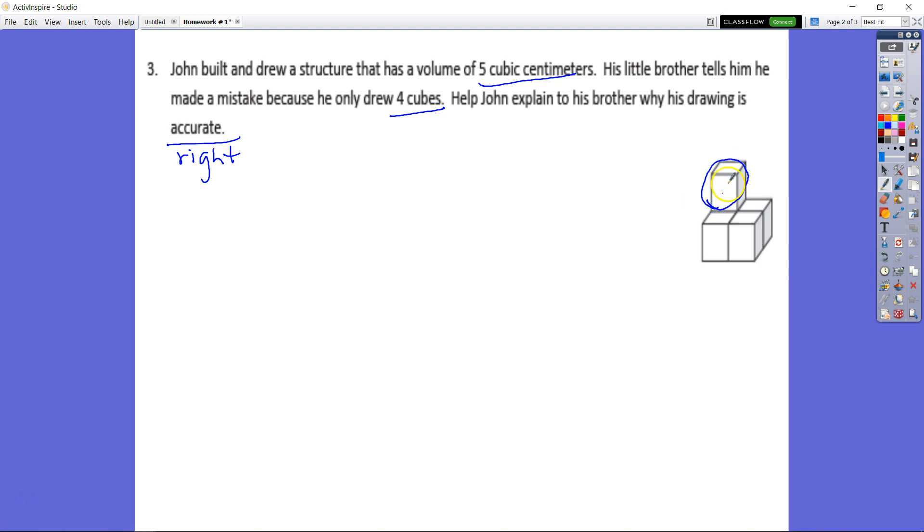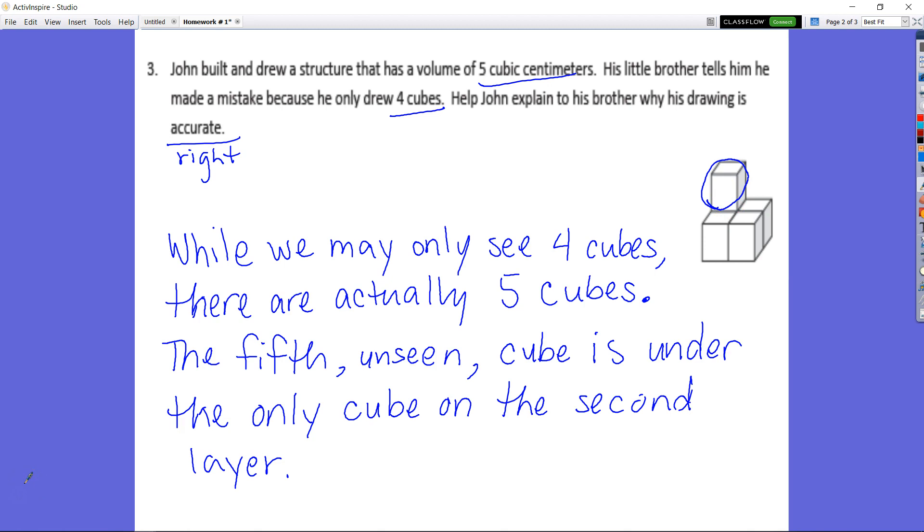And what we're basically going to talk to baby bro about is the fact that this cube is not a magical cube. It's not floating. In order for this cube to be up like this, it has to be something underneath it. So here's what we came up with. While we may only see four cubes, we see one, two, three, four, the fifth unseen cube is under the only cube on the second layer. So underneath this cube here that I have circled, there has to be a cube in order for this cube to appear to float. All right. So we know that there has to be something underneath that in order for it to be up like that. But that's what we can explain to baby bro. All right, let's move on.